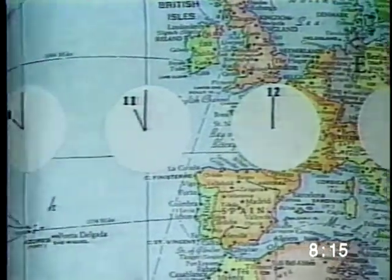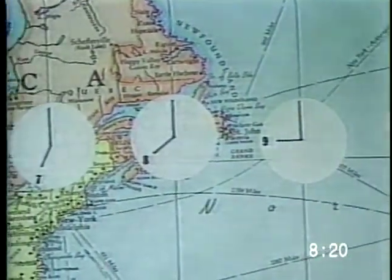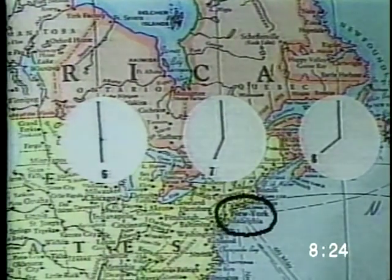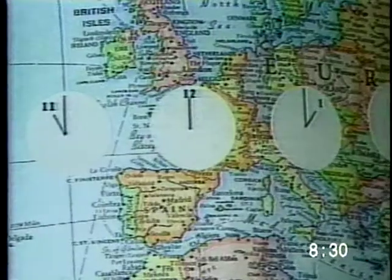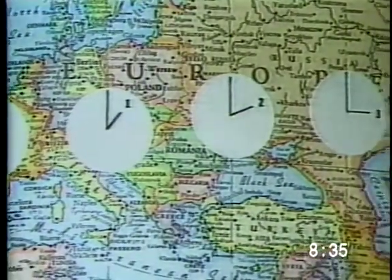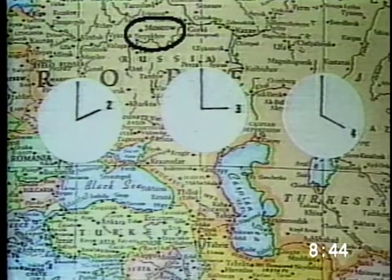As you go west from the prime meridian, the time is one hour earlier for each time zone. For example, if it is noon in Greenwich, it is 7 a.m. in New York, because New York is five time zones to the west of Greenwich. As you go eastward from the prime meridian, it is one hour later for each time zone. Moscow in Russia is three time zones eastward from Greenwich. Therefore, if it is noon in London, it is 3 p.m. in Moscow.